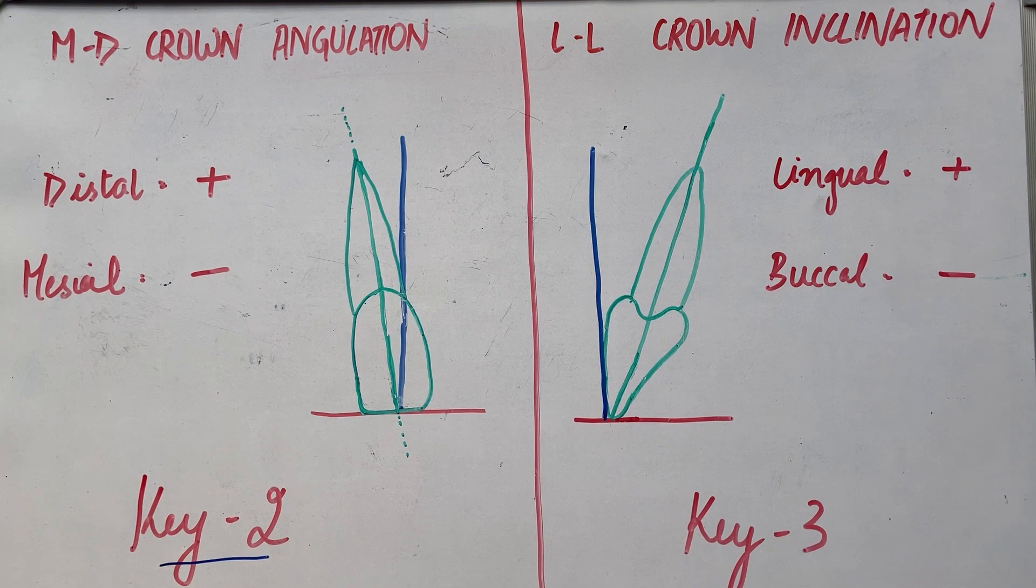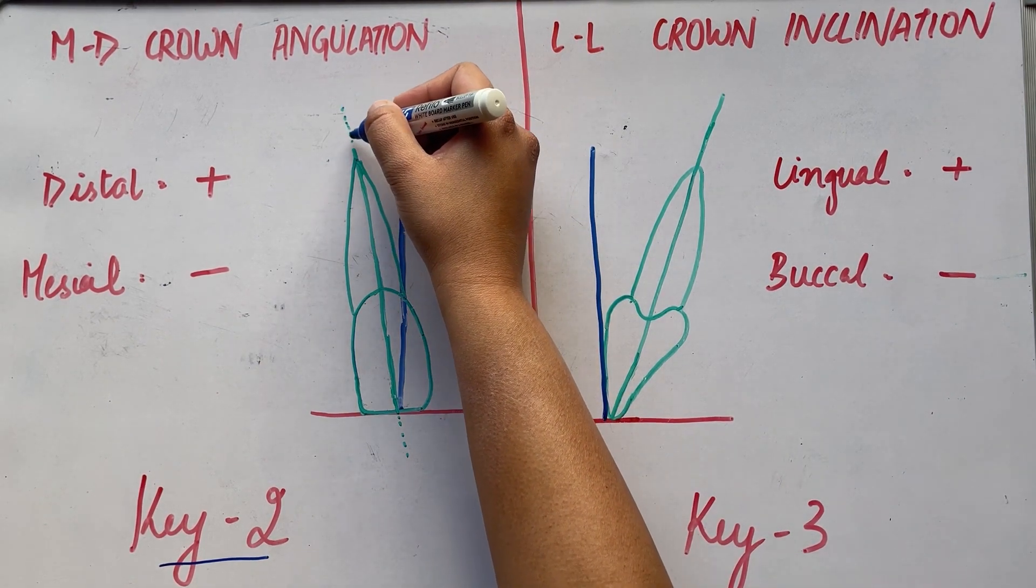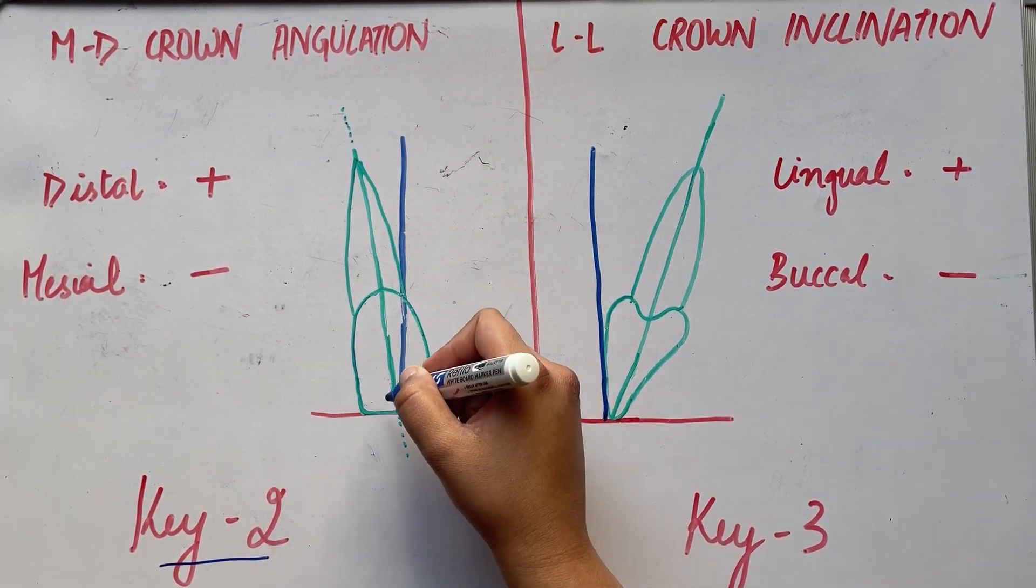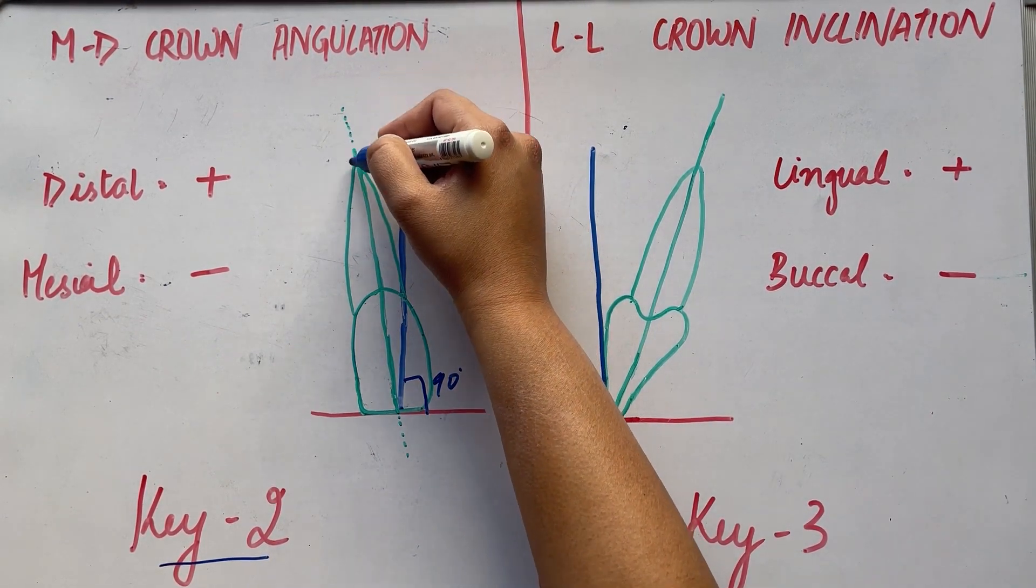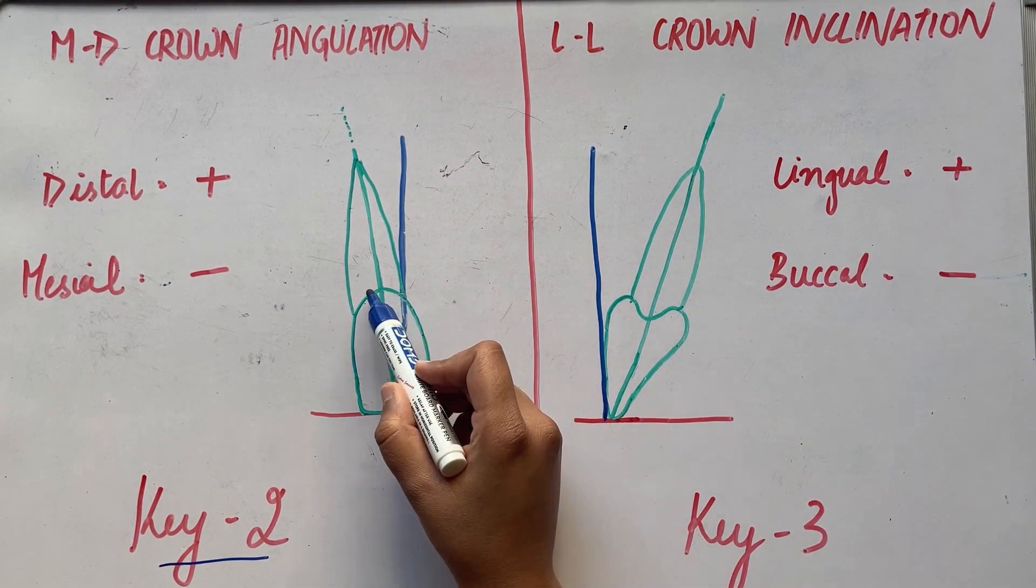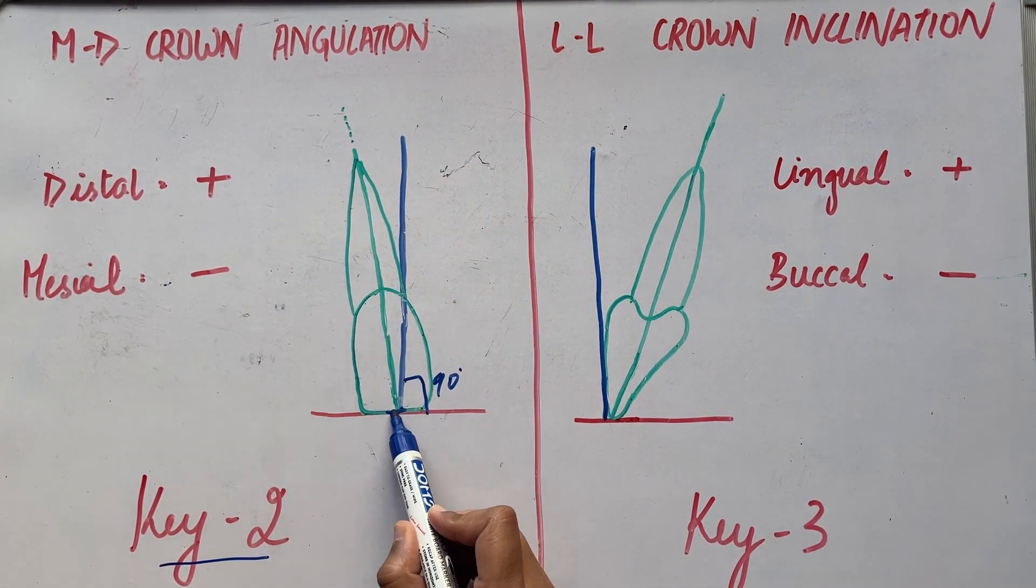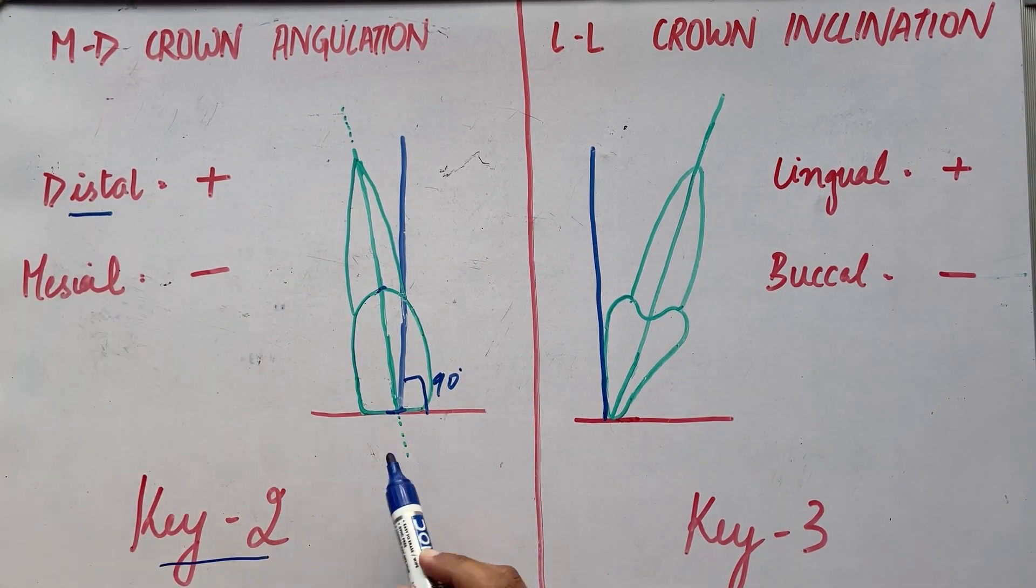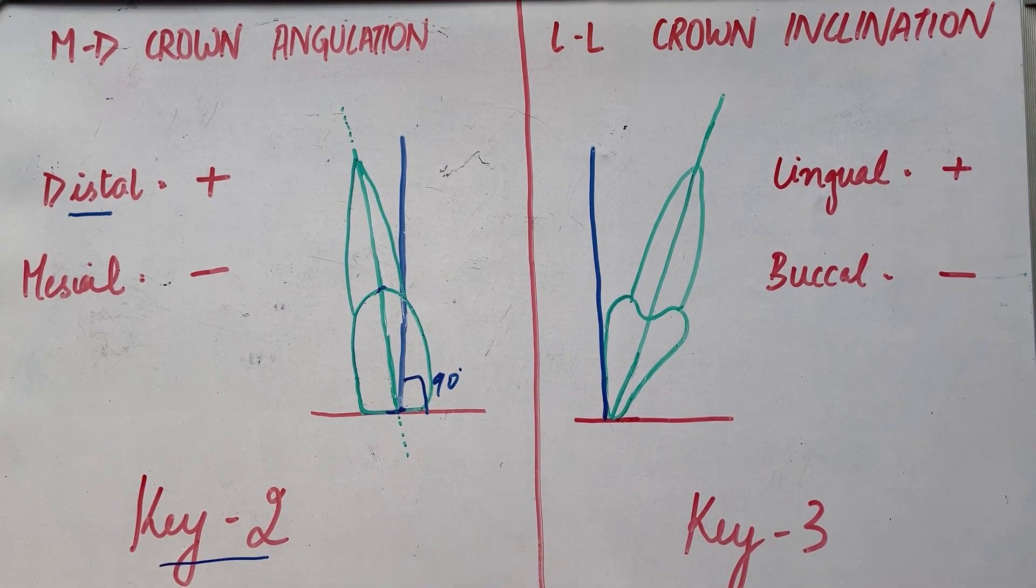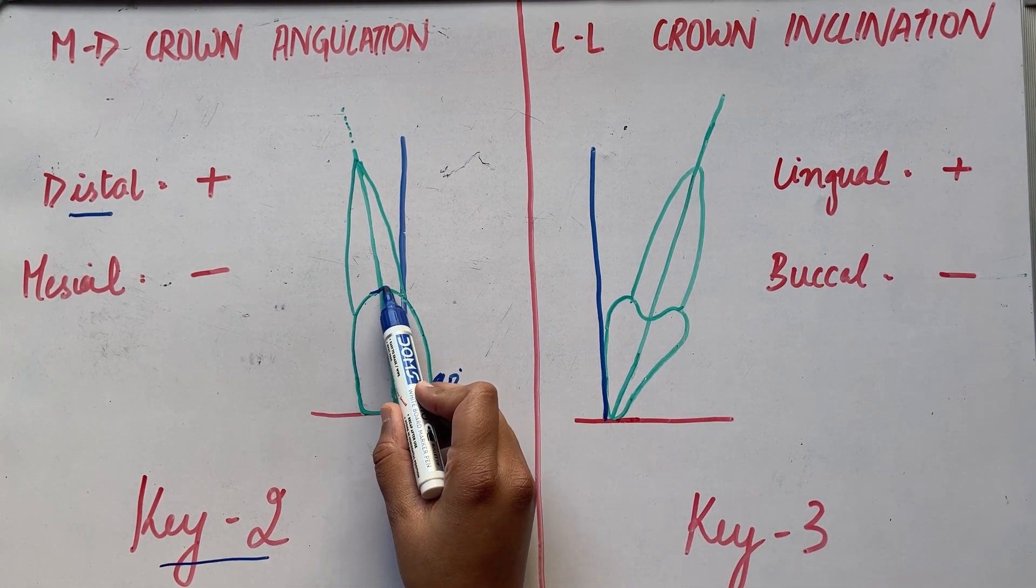The next key, that is key 2, is mesiodistal crown angulation or tip. Crown angulation means that the gingival portion of the long axis of all crowns was more distal than the incisal portion. The degree of crown tip is the angle between the long axis of the crown, as viewed from the labial or buccal surface, and a line bearing 90 degrees from the occlusal plane. Crown tip is expressed in degrees, plus or minus.